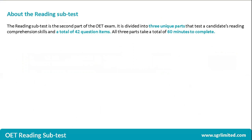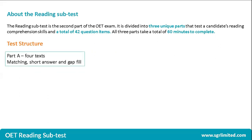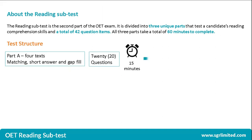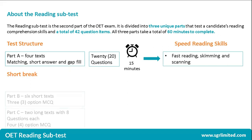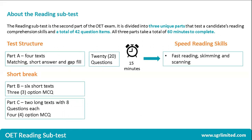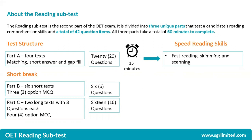In summary, always remember that the reading subtest is the second part of your OET exam. It's divided into three unique parts — Parts A, B, and C — for a total of 42 questions, and you need to answer all of these questions within 60 minutes or one hour. The test starts with Part A, which contains four texts. You will need to answer 20 questions within 15 minutes. Part A tests your fast reading skills, your skimming and scanning skills. There will be a short break in the middle so that you can submit your paper before receiving the test paper for Parts B and C. Part B contains six short texts with one question each for a total of six questions. Part C contains two long texts, eight questions each, for a total of 16 questions.